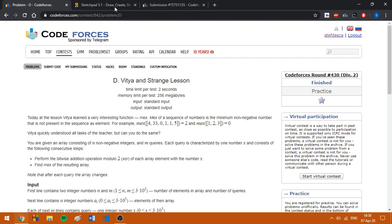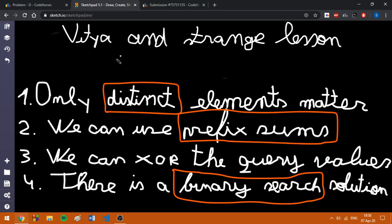Let's move on to explaining the solution. Here I added four important observations which will help you solve the problem easily. The fourth observation, which is the most obvious one, is that only distinct elements matter.